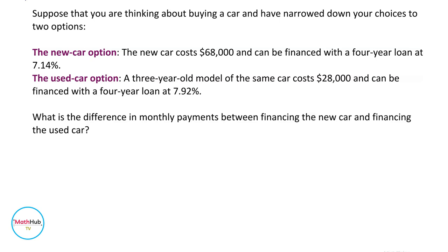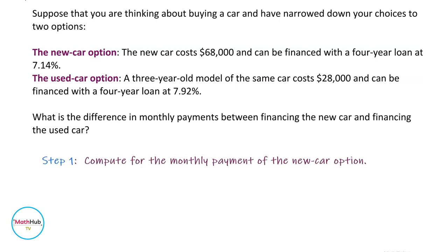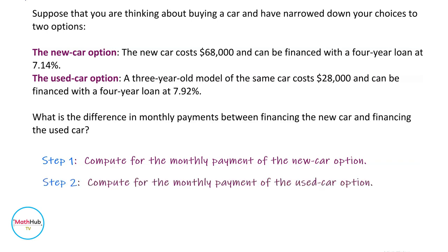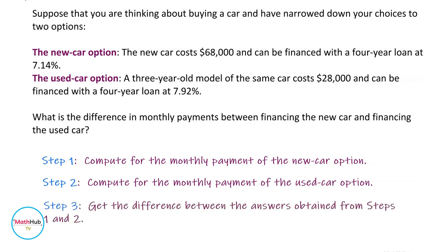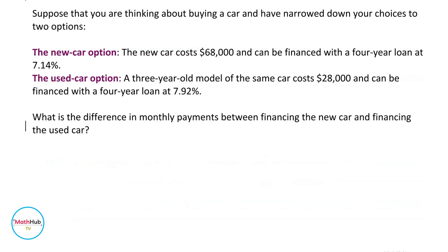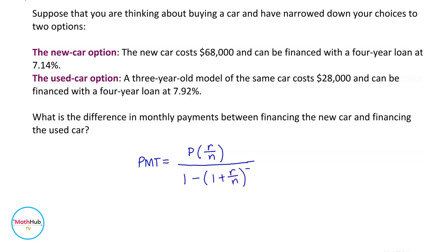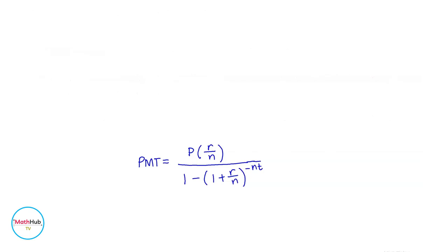To solve this problem, we will compute the monthly payment for the new car option, then the used car option, and get the difference. We will use the following formula: PMT is equal to P, the principal amount borrowed, times R over N, where R is the rate and N is the number of paying periods. The denominator is 1 minus the quantity 1 plus R over N, raised to negative N times T, where T is the number of years.